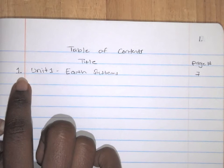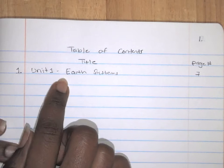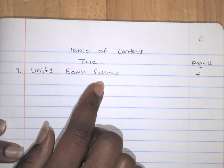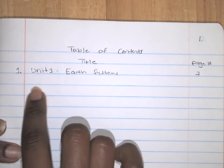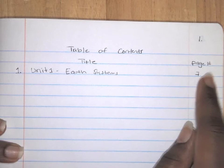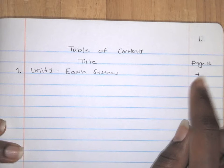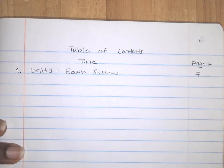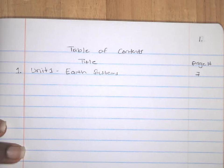The first unit is Unit One: Earth Systems. You're going to write that here and you're going to start on page seven. If you need more time to write this information down, go ahead and pause the video.